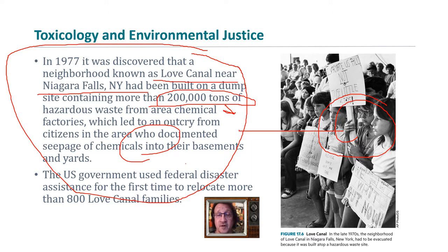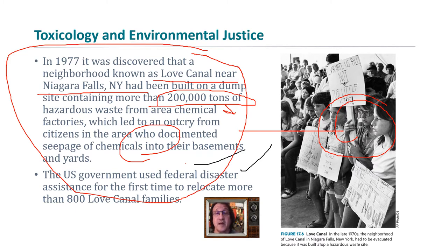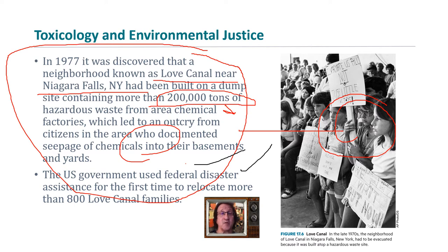A similar challenge arose with Flint, Michigan, where many of the illnesses people reported were not directly attributable to what was found in the water, and contaminant levels couldn't fully explain the amount of illness observed. We had to examine other factors like stress and general illness unrelated to the water. Toxicology tries to turn a correlation between a toxin being present and illness into cause and effect, requiring experimental methods to confirm that a toxin is truly responsible.